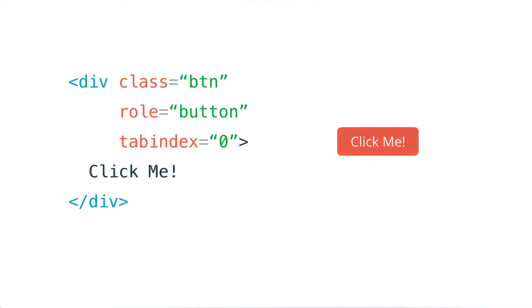Now let's check out a custom button that I've created using a focus style. Notice that when I go and click on the button with a mouse, both the focus style and the focus ring are applied and they stick around.